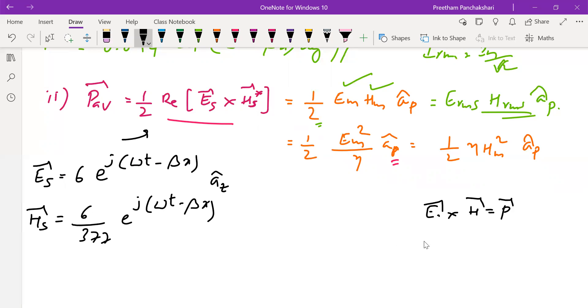Direction of E is taken as z. H is to be calculated. Direction of the wave propagation, that is Poynting vector, is positive x. This is the direction of the wave propagation. This is the direction of the electric field. We have to find the direction of H now, and this is going to be minus y.